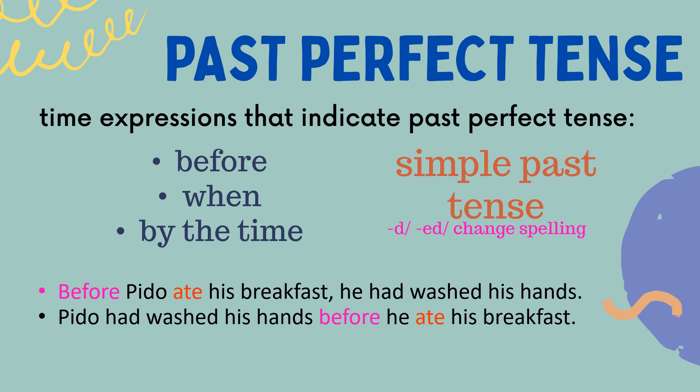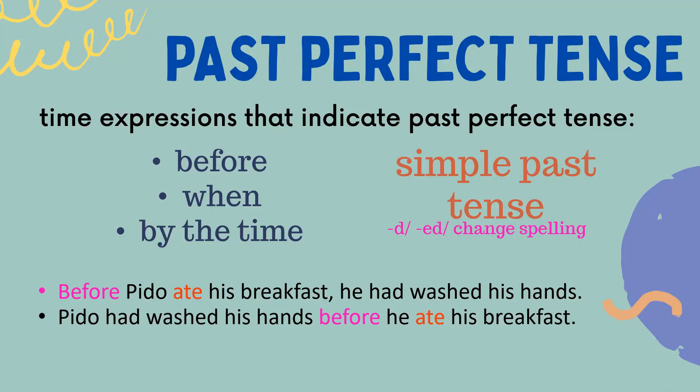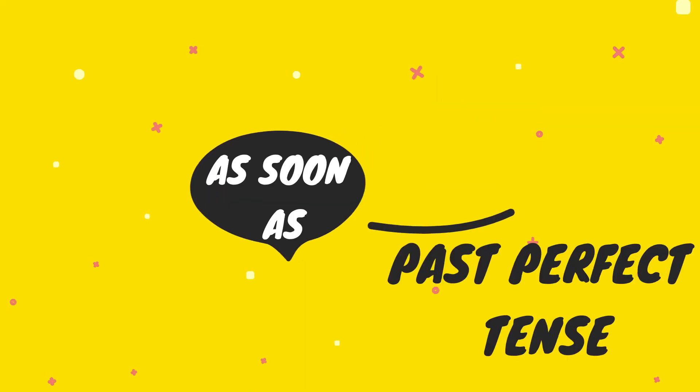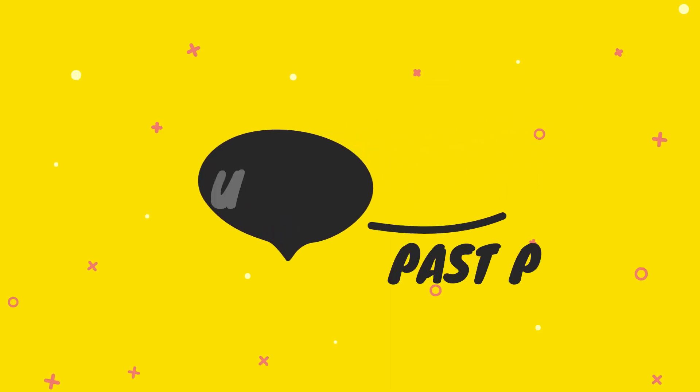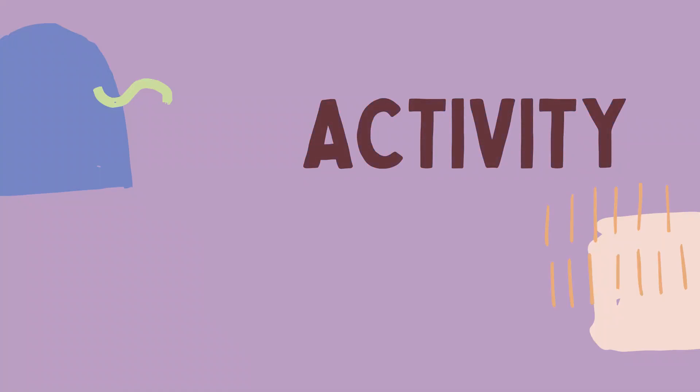Example: 'Before Pido ate his breakfast, he had washed his hands.' We use the time expression 'before,' so it should be followed by Simple Past Tense, which is 'ate.' Another example: 'Pido had washed his hands before he ate his breakfast.' The placement of 'before' is now at the middle of the sentence, but still it should be followed by Simple Past Tense, which is 'ate.' Always remember that if we use the time expressions 'after,' 'as soon as,' 'the moment that,' and 'until,' they should be followed by the Past Perfect Tense.